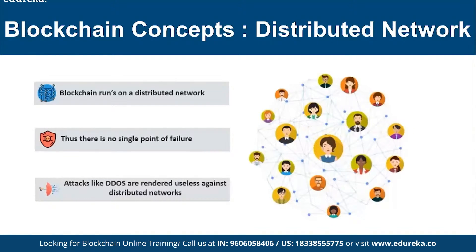Because data is not stored in a single network, DDoS attacks — where you keep sending requests to one server indefinitely from the same IP in order to bring it down — are not possible here. Since the data is distributed across many hosts, even if you bring one down, the entire system still works fine. That's the best advantage of the blockchain's distributed architecture.